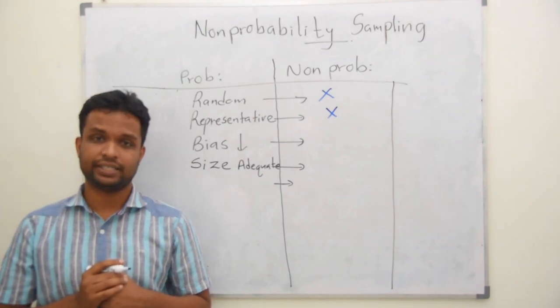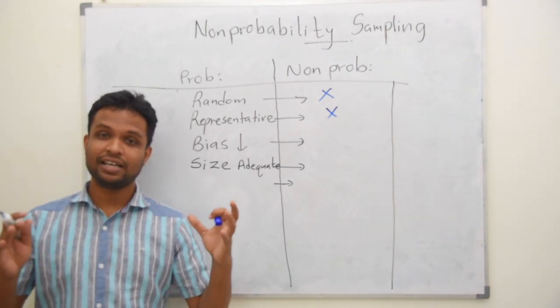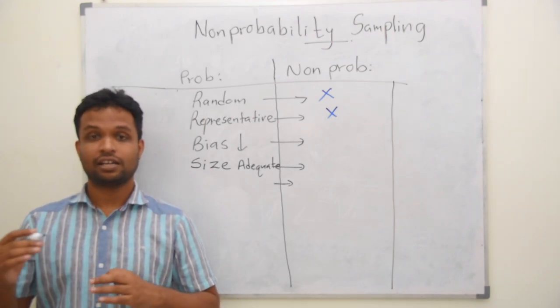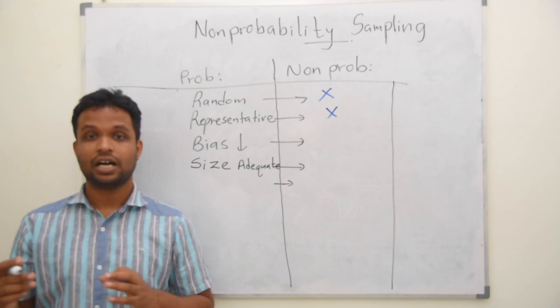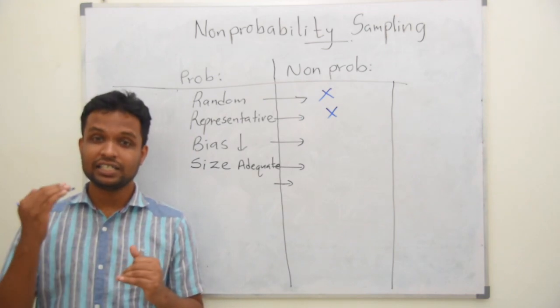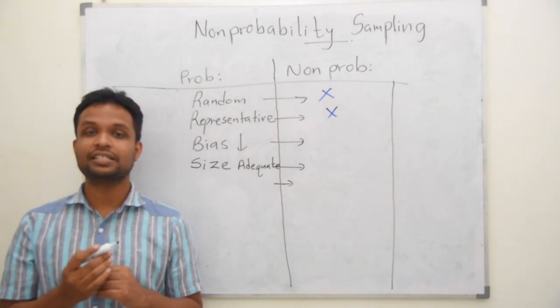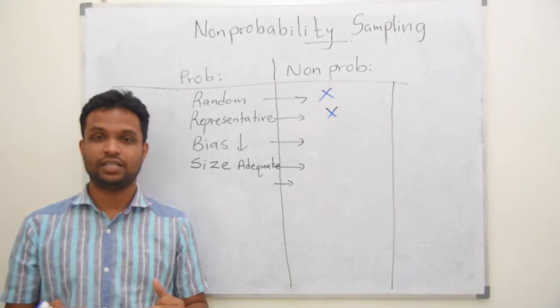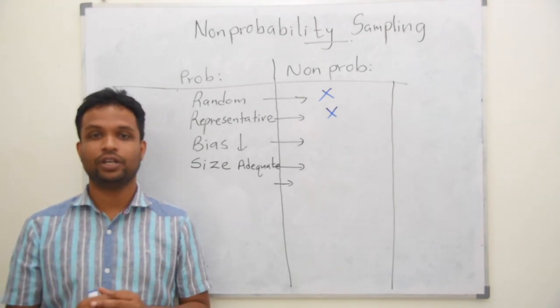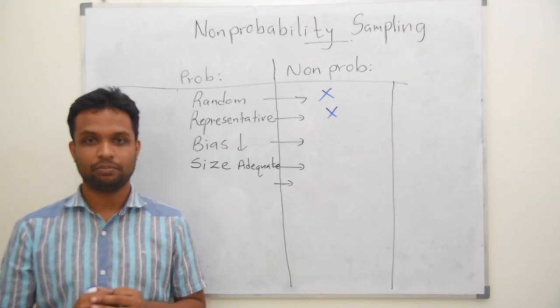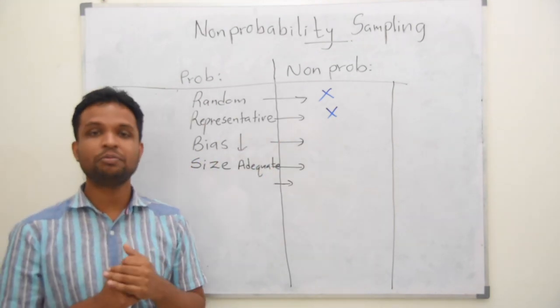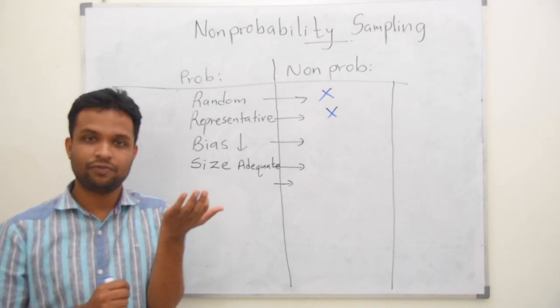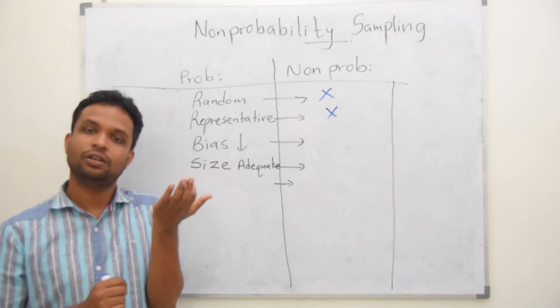What about bias? I explained, simple random sampling is the most unbiased technique. And cluster sampling and multistage are the sampling techniques with highest bias under Probability Sampling Techniques. But again, we are trying to minimize bias even during cluster sampling and multistage sampling. But here in non-probability sampling, we might get high bias but we are trying to maintain low bias.